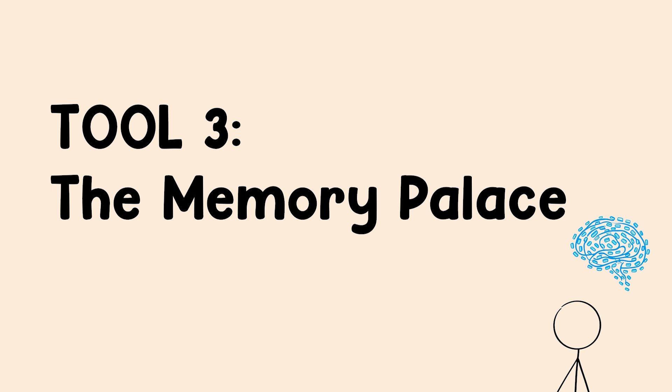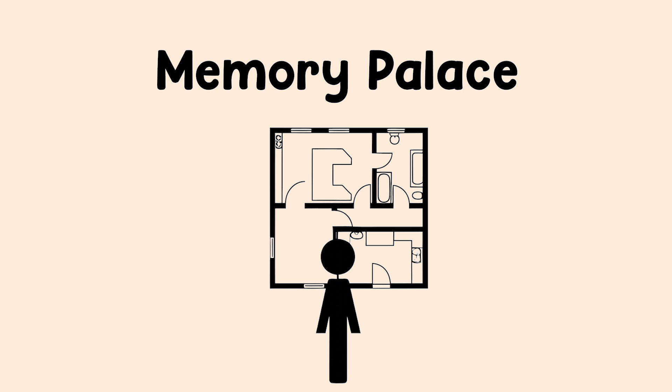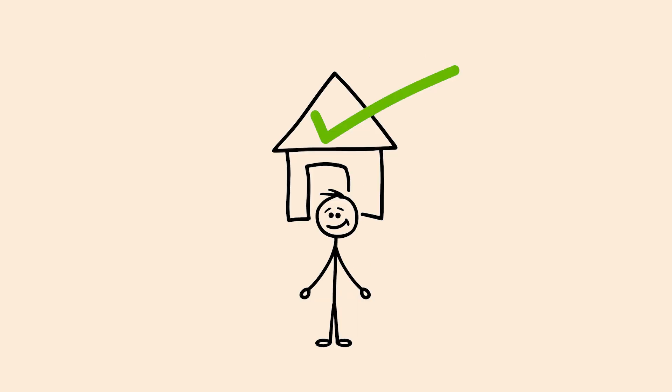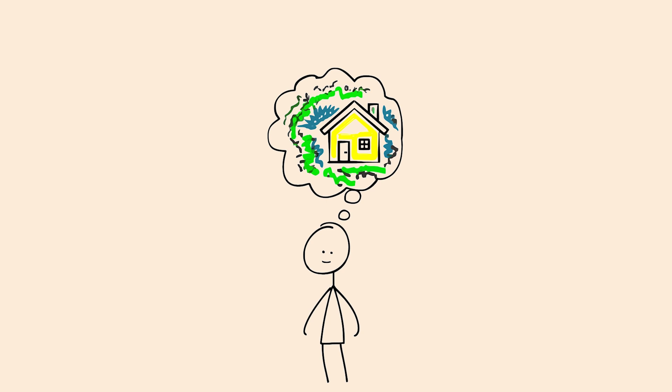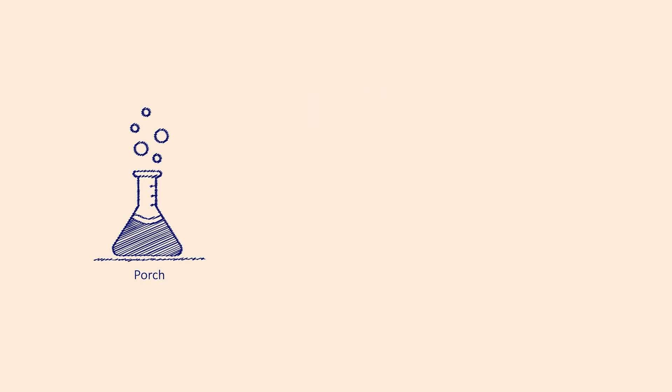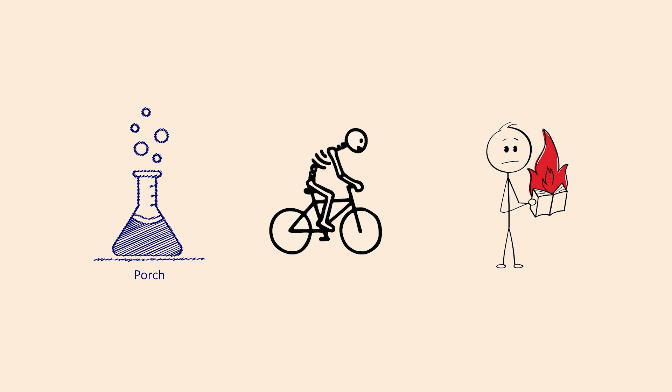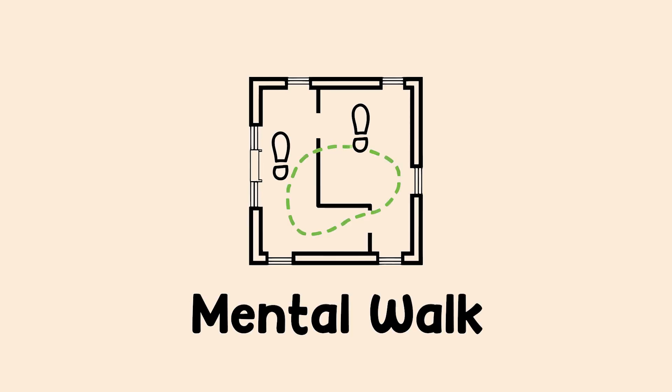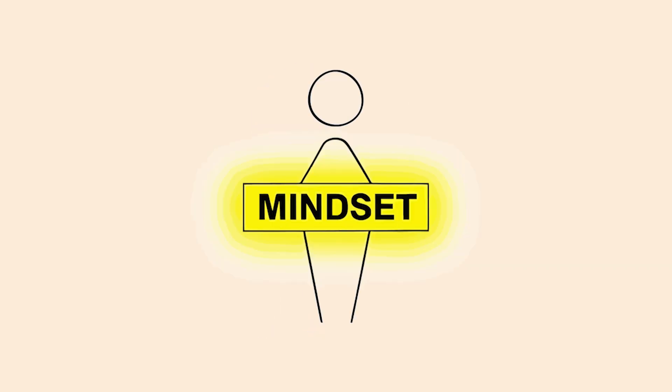And the third tool is a bit different, but it's amazing for remembering lots of facts. It's called a memory palace. You pick a place you know like the back of your hand, like your house. Then you mentally place weird, vivid images representing what you need to remember in different rooms. To remember the steps of a scientific process, you might picture a giant beaker bubbling on your front porch, a skeleton riding a bike in your hallway, and a textbook on fire in your kitchen. To recall the info, you just take a mental walk through your house. It sounds silly, but it works.